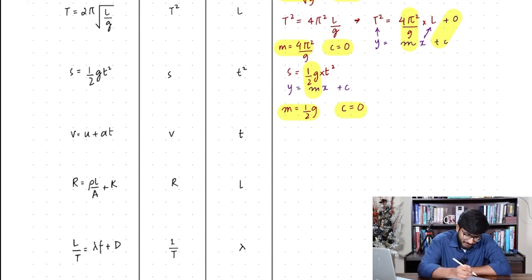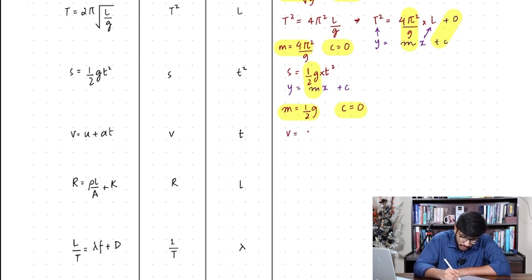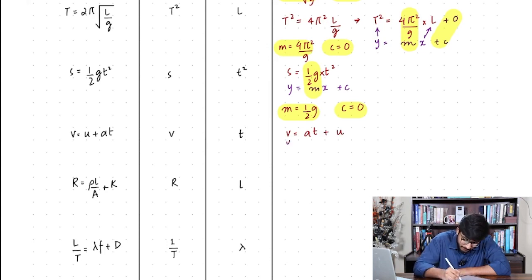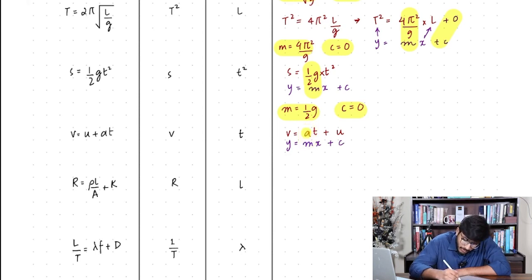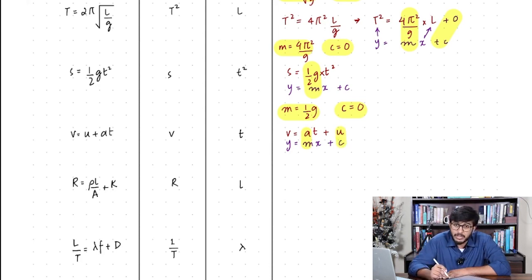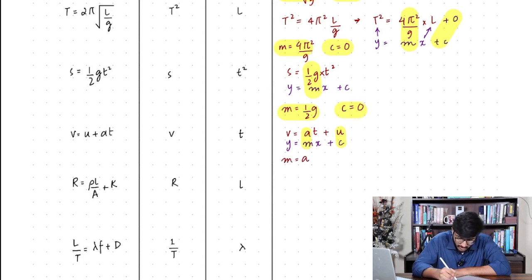Let's try v equals u plus at, with v on the y-axis against t on the x-axis. I rearrange the equation and compare with y equals mx plus c. You can see that the acceleration a is actually the gradient and u is the y-intercept. So the gradient is equal to a and the y-intercept is equal to u.